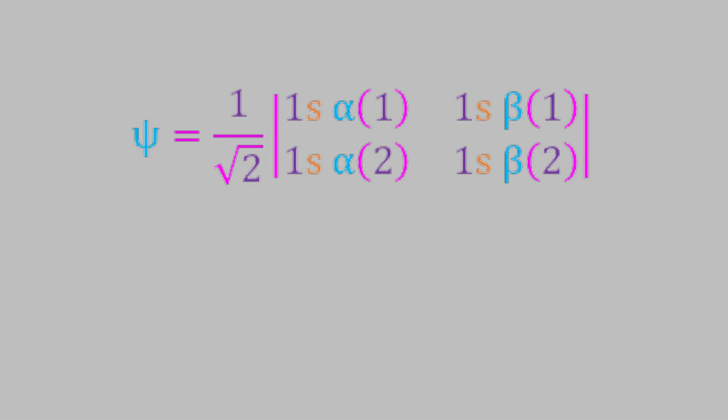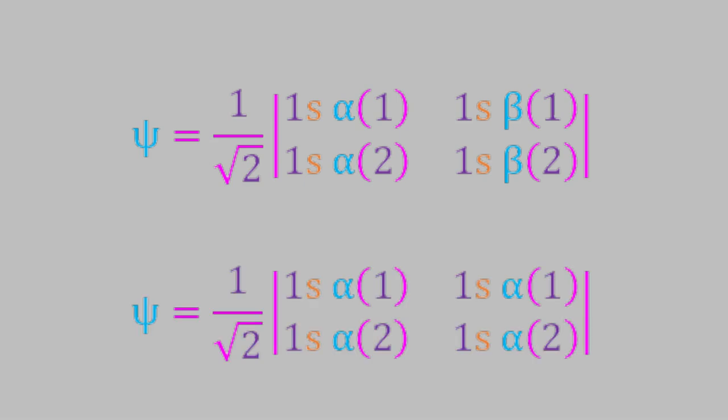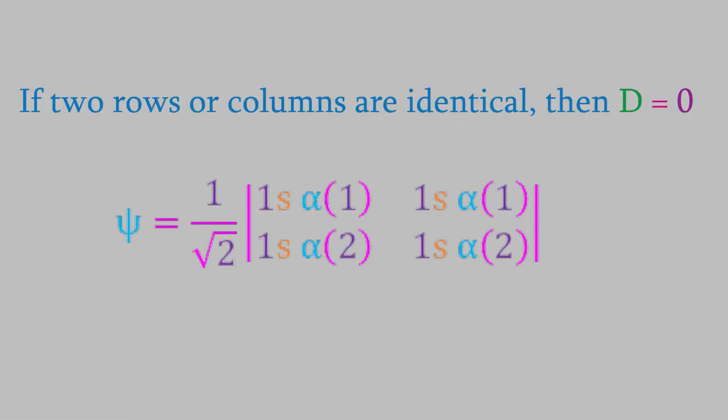Now, imagine what would happen if both electrons had the same spin, instead of one having spin alpha and the other spin beta. In that case, the spin in the second column would be alpha, so our determinant would look like this. But wait, if you watched the previous video, you know that one of the properties of determinants is that if any two rows or columns of a determinant are identical, then the determinant equals zero. In this case, columns one and two are now identical, so the determinant would now equal zero.